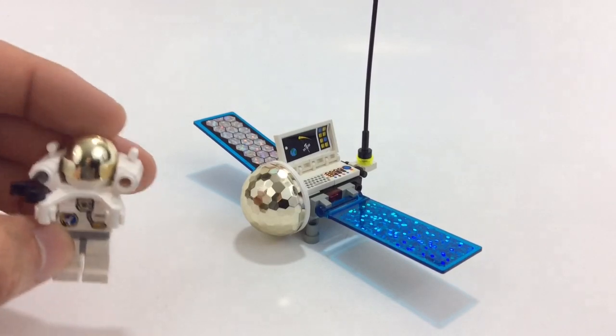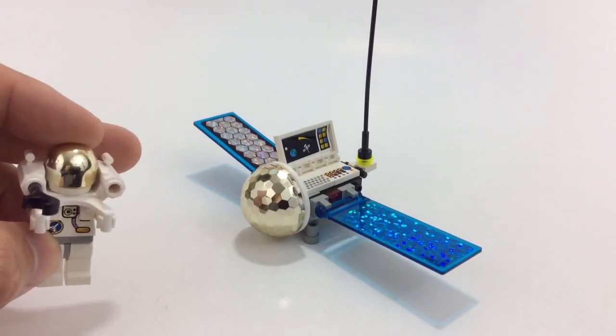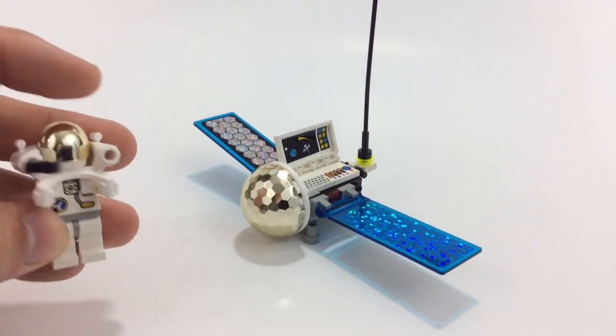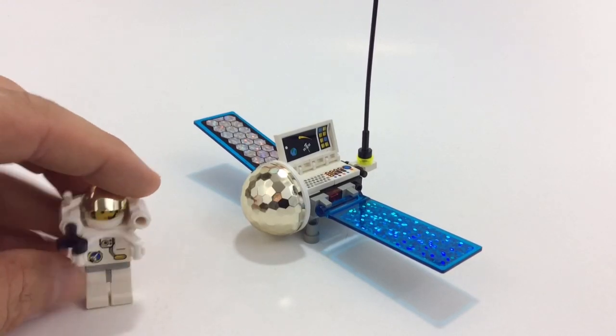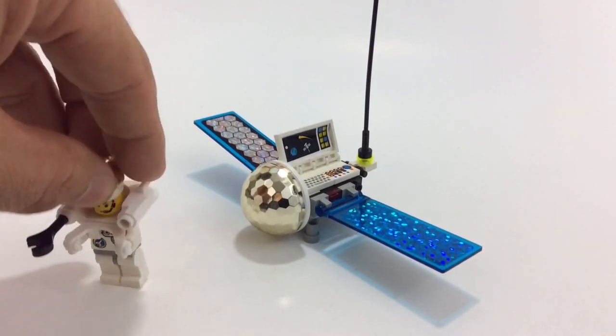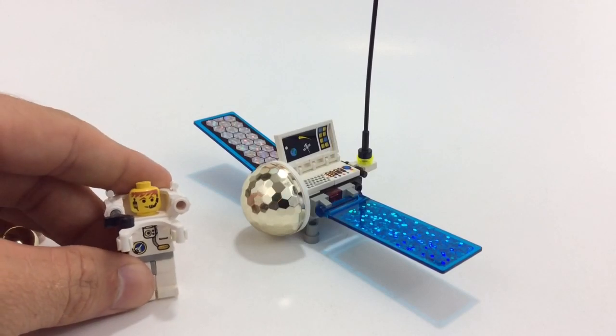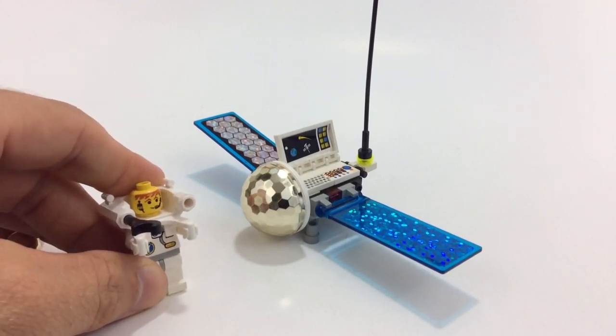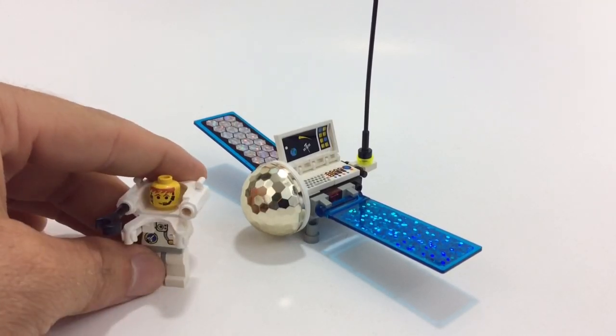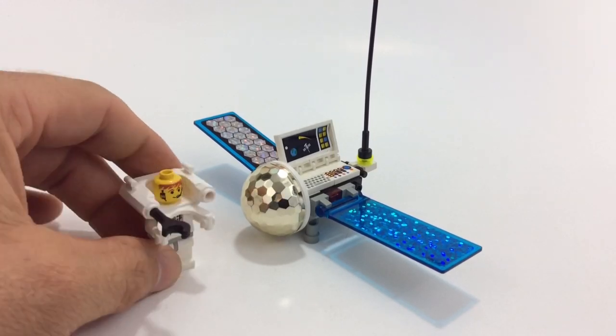I really love this gold helmet. You can just see the reflection of everything in there. The printing on the face has kind of got the mic going. Looks like he's about to join a boy band maybe, start singing, got the red hair, and got the space symbol on the torso.